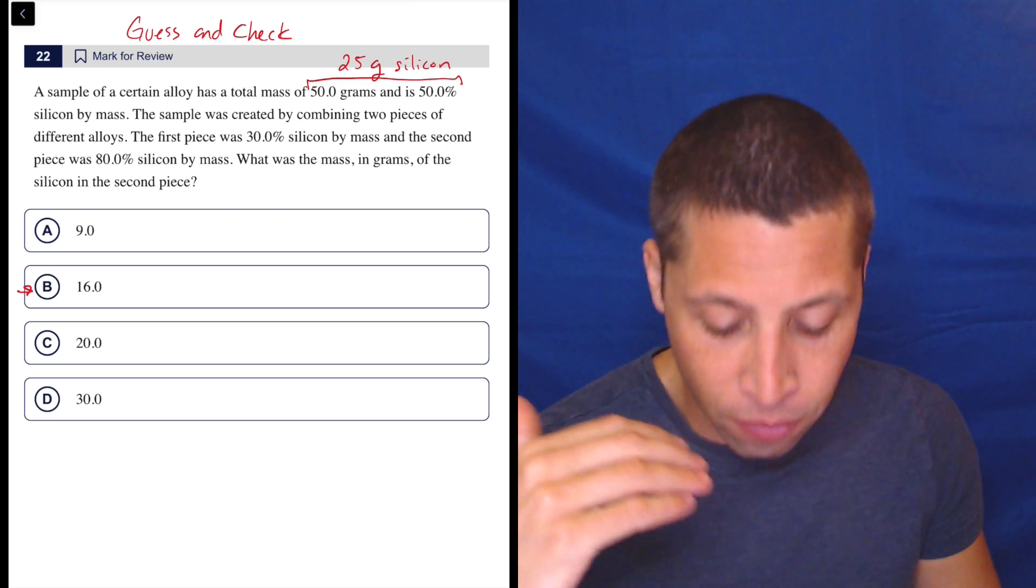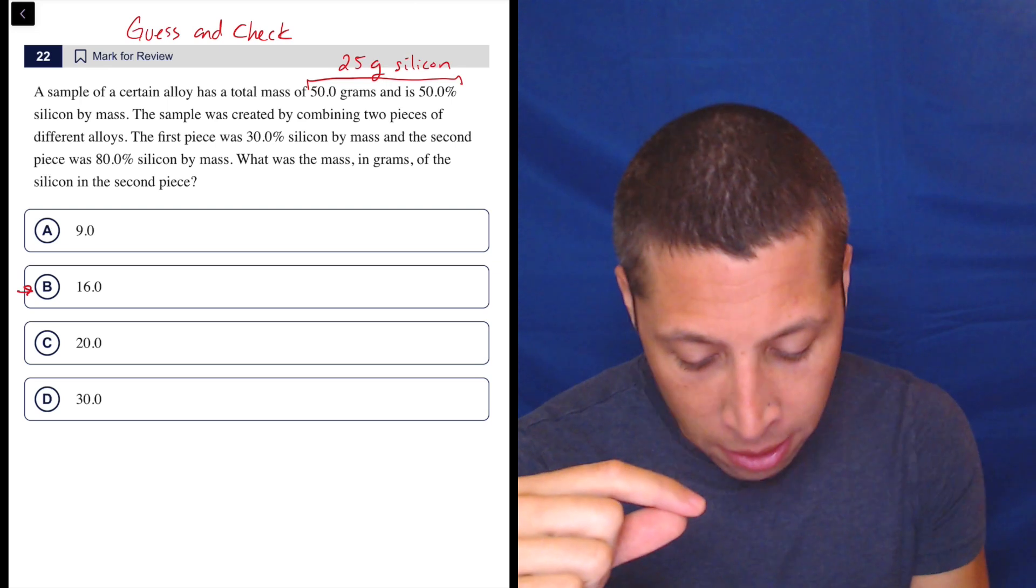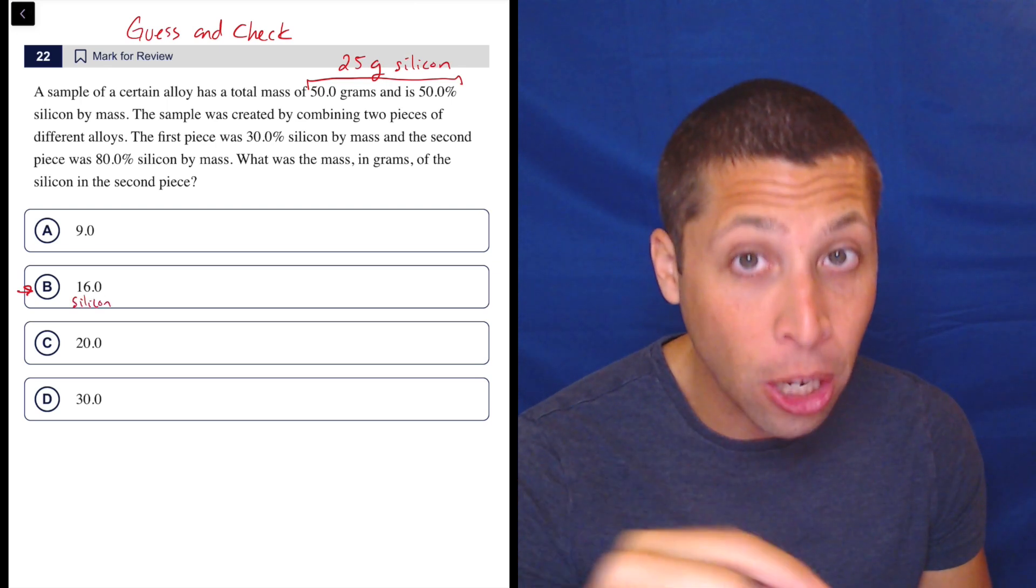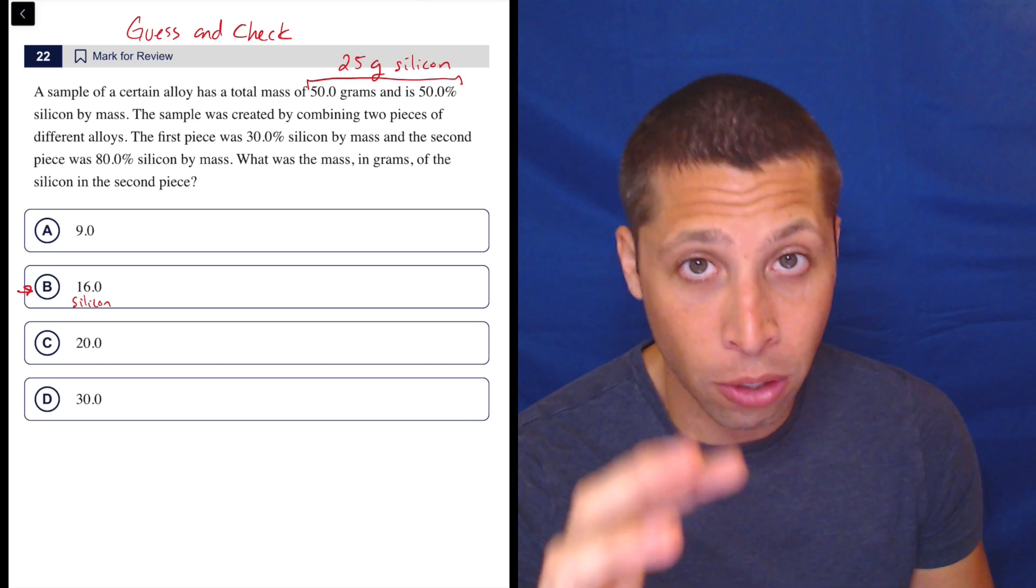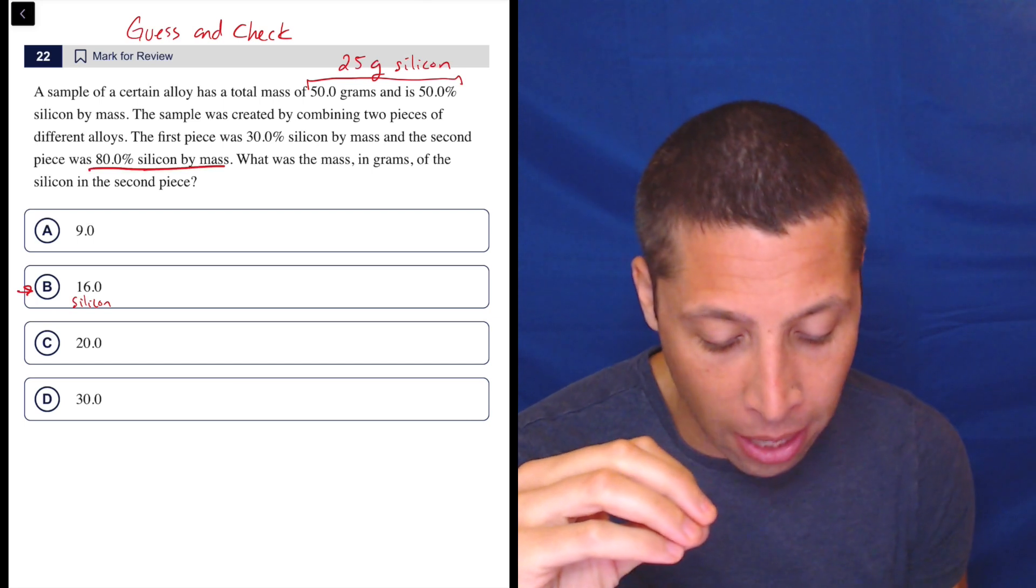So what does it mean? All right, let's focus on this. The 16 is the mass of the silicon. So mass of silicon in the second piece. What do I know about the second piece? Now we comb through this story looking for stuff I can do with this answer.